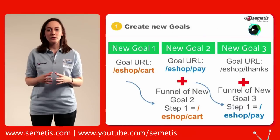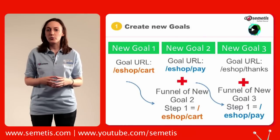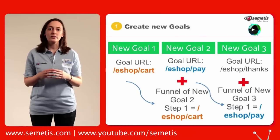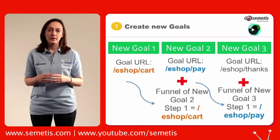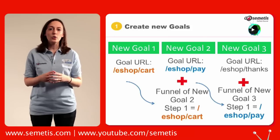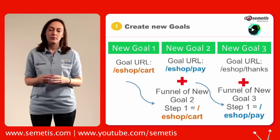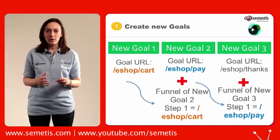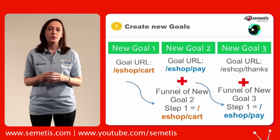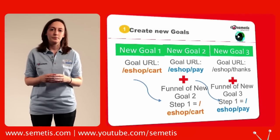Then, for each one of the new goals created except for the first one, you need to set up and specify a one-step funnel. This one-step funnel is going to be the goal URL of your preceding step. For example, goal 3 will have a one-step funnel with the goal URL of your new goal 2.